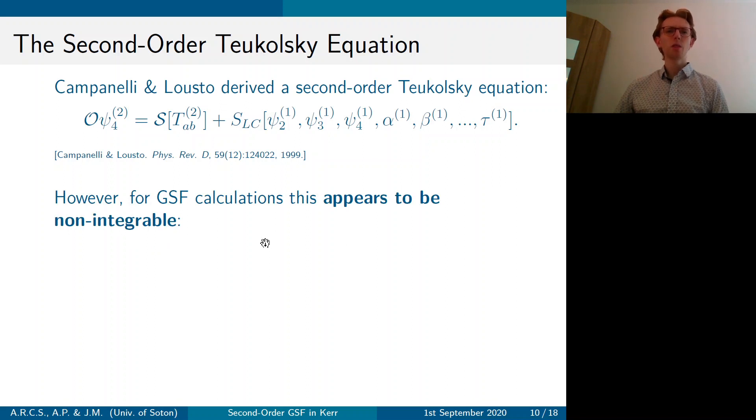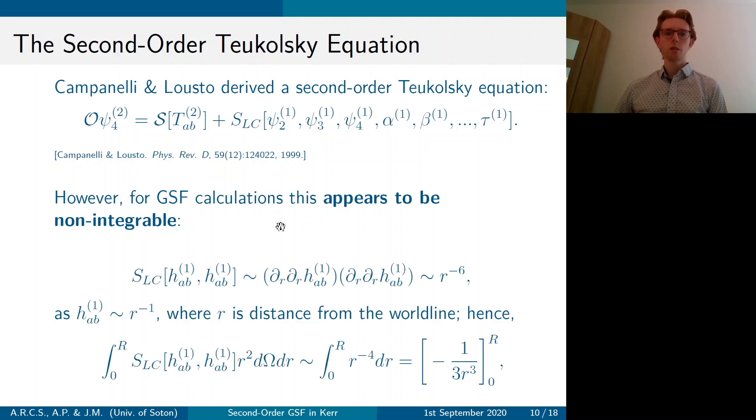However, when you try and apply this equation to the gravitational self-force problem, it appears to be non-integrable. And that's due to the highly singular nature of the source. So near the world line, the metric perturbation is singular, where R is distance from the world line. And this is due to the presence of the compact object, which makes the source very singular, R to the minus 6.